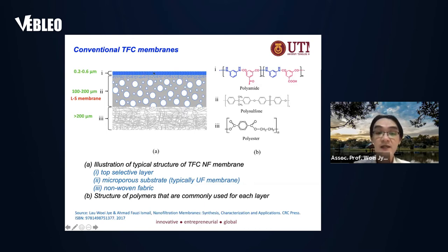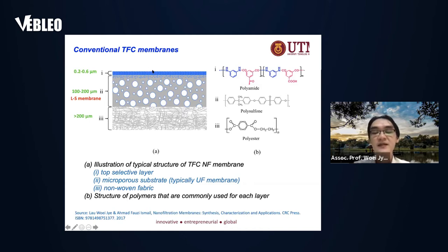The most important part of the membrane is the polyamide layer, because this is the layer that governs the salt rejection as well as the fouling behavior of the membrane. How you fabricate this very thin layer is mainly because researchers use two reactive monomers to cross-link with each other, and then you get a very thin polyamide on top of the substrate.